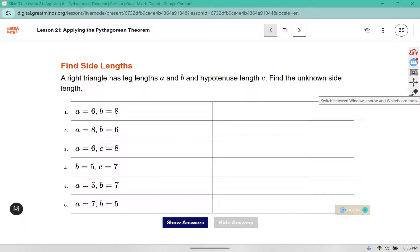A right triangle has side lengths A and B and hypotenuse length C. Find the unknown side length.